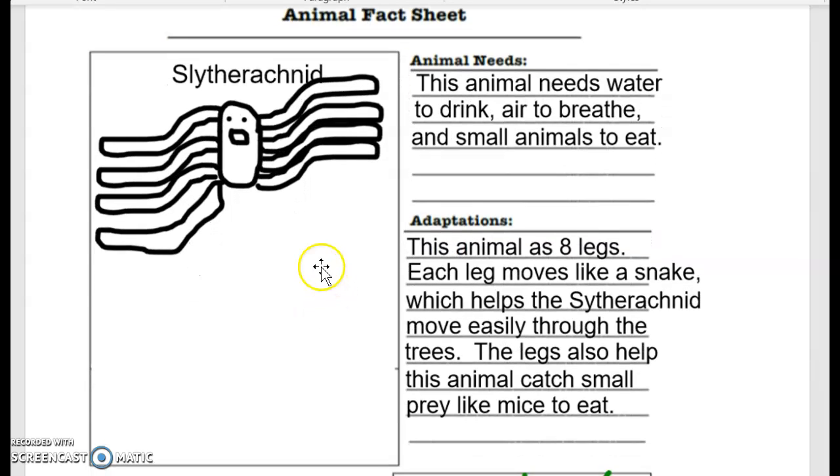So here's my animal. I gave it a name. I discovered this animal. It is not a real animal. I call it the slitheracnid. And so I drew it. It's part spider, but instead of having spider legs, it has snakes for legs. Pretty horrifying. So this is my animal that I discovered. No one has ever seen it before, the slitheracnid. So I drew my picture. A better picture would have labels. A better picture would have more color in it than mine.